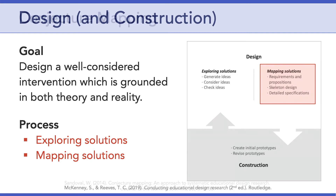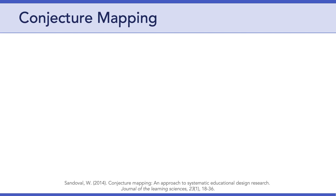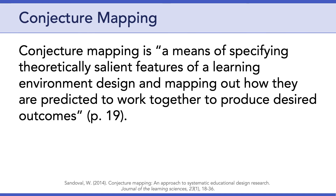And then finally, we will begin to detail the specifications of our chosen design. This brings us to the idea of conjecture mapping, which is based on a 2014 article by William Sandoval, a professor of education at UCLA. I want to introduce conjecture mapping because the ideas in the McKinney and Reeves chapter are a bit too vague to be useful. According to Sandoval, conjecture mapping is a means of specifying theoretically salient features of a learning environment design and mapping out how they are predicted to work together to produce desired outcomes. Put more simply, conjecture mapping is a way to concretize the what and the why of your design idea in a systematic and easy to understand way. It is a way of conceptualizing design research.